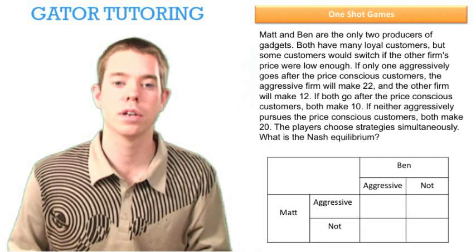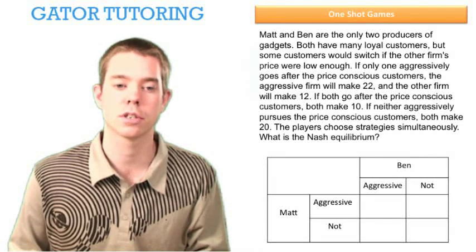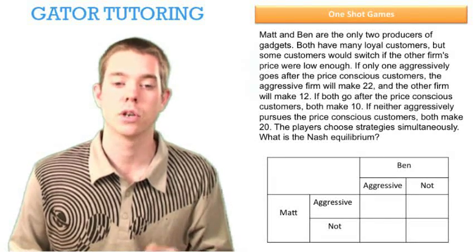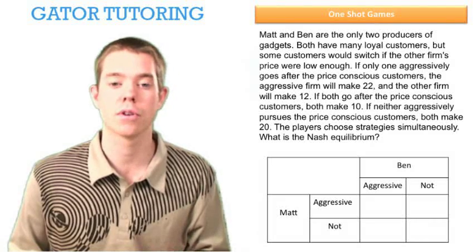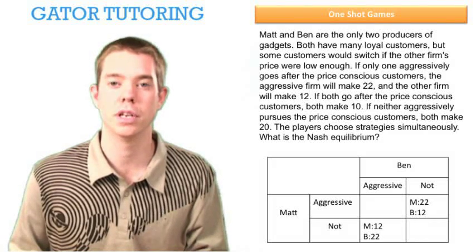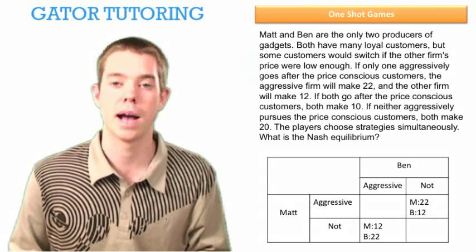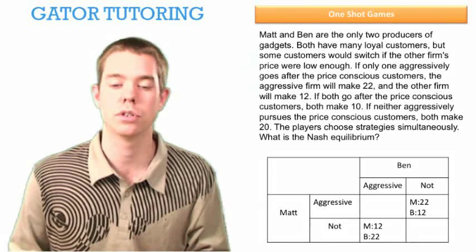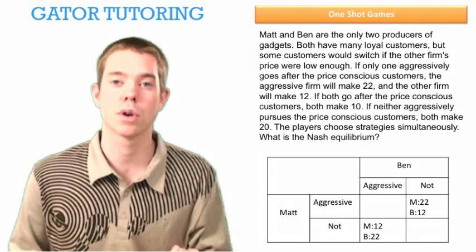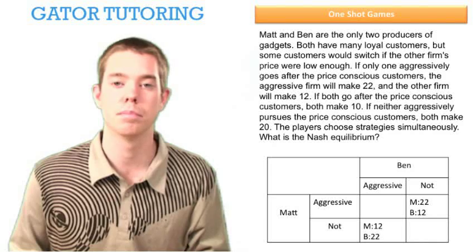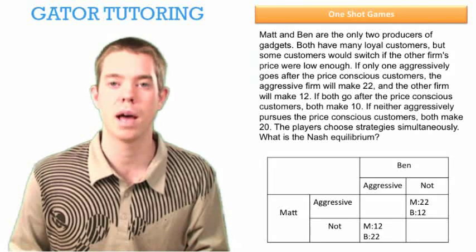It says: if one aggressively goes after the price-conscious customers, the aggressive firm will make 22 and the other firm will make 12. So those are these two corner boxes. When Matt's aggressive and Ben's not, Matt makes 22 and Ben makes 12. When Ben's aggressive and Matt's not, Ben makes 22 and Matt makes 12.